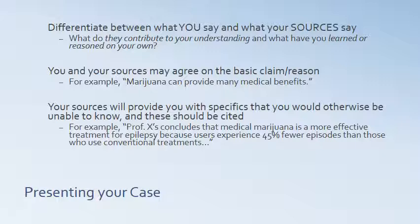You could say on your own, without any citation: 'Marijuana can provide many medical benefits.' But when talking about the specific benefits and how marijuana affects them, you would cite the specifics: 'Professor X concludes that medical marijuana is a more effective treatment for epilepsy because users experience 45% fewer episodes than those who use conventional treatments.' This differentiates between your argument and your sources' argument. It's always very important to make clear who says what.